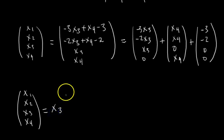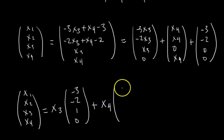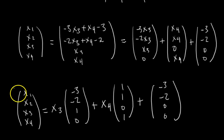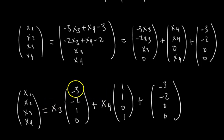So x1, x2, x3, x4 equals, then the last step is just factor out the free variables. So we have x3 times negative 3, negative 2, 1, 0. Plus x4 times 1, 1, 0, 1. Plus our constant vector. Okay, and just like that, I mean, you could box this up. That is our solution to the linear system written in parametric vector form.